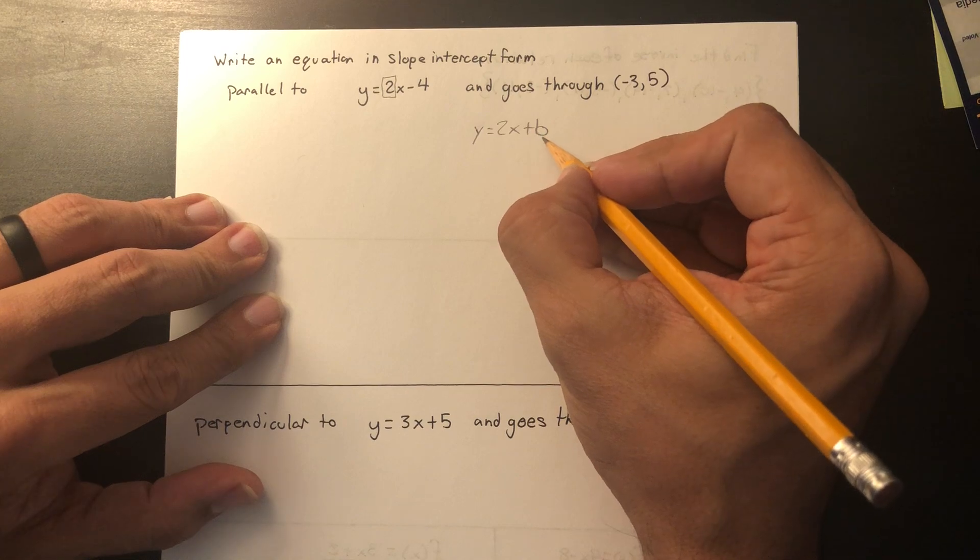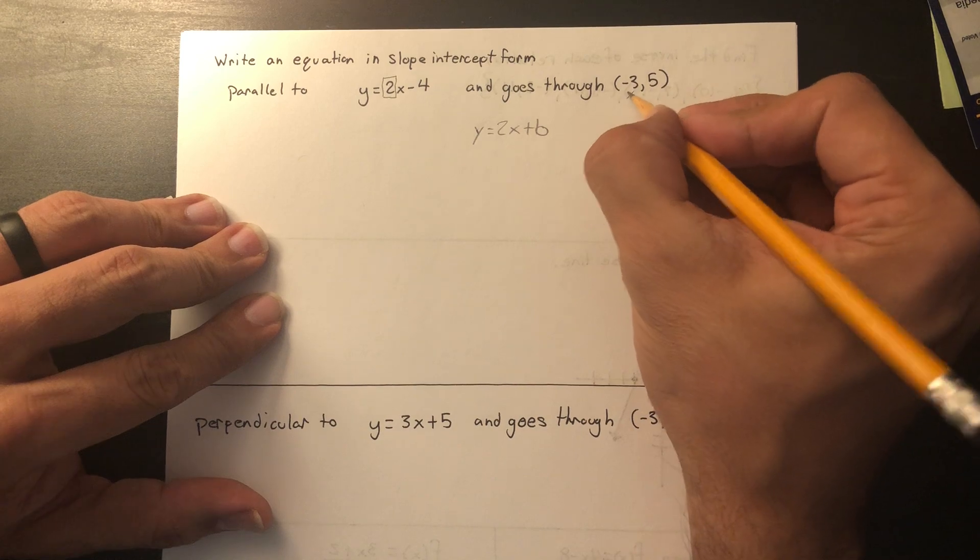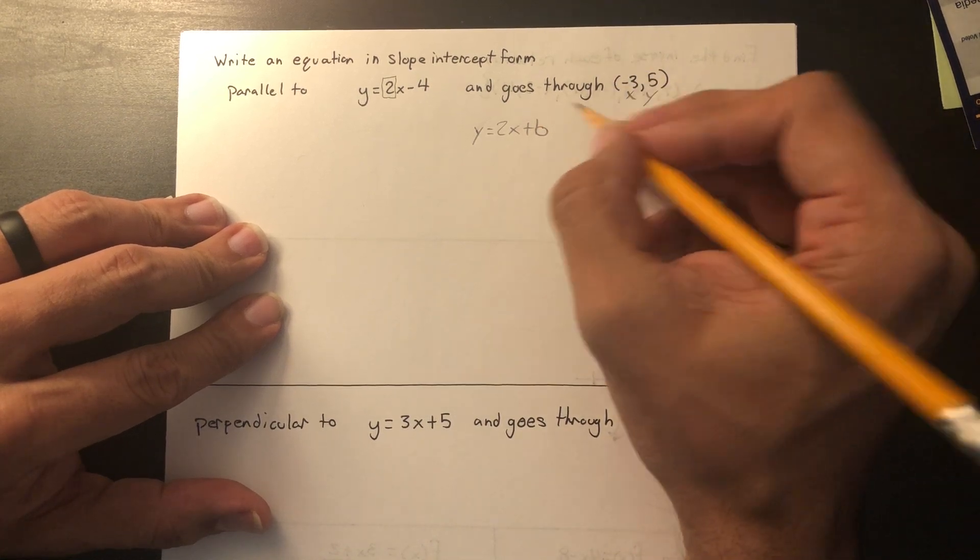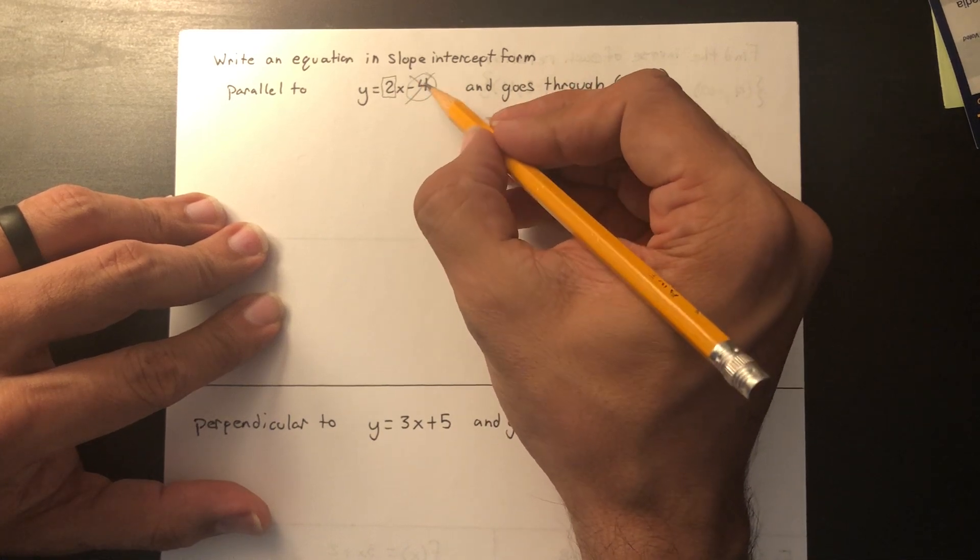So y equals 2x plus b. Now we have the same slope, but now we have to figure out b because I have to write in slope-intercept form and I need the intercept. We're going to plug in this x and this y into the equation to figure out b. When are you going to use this for again? I'm not. I don't care about that.